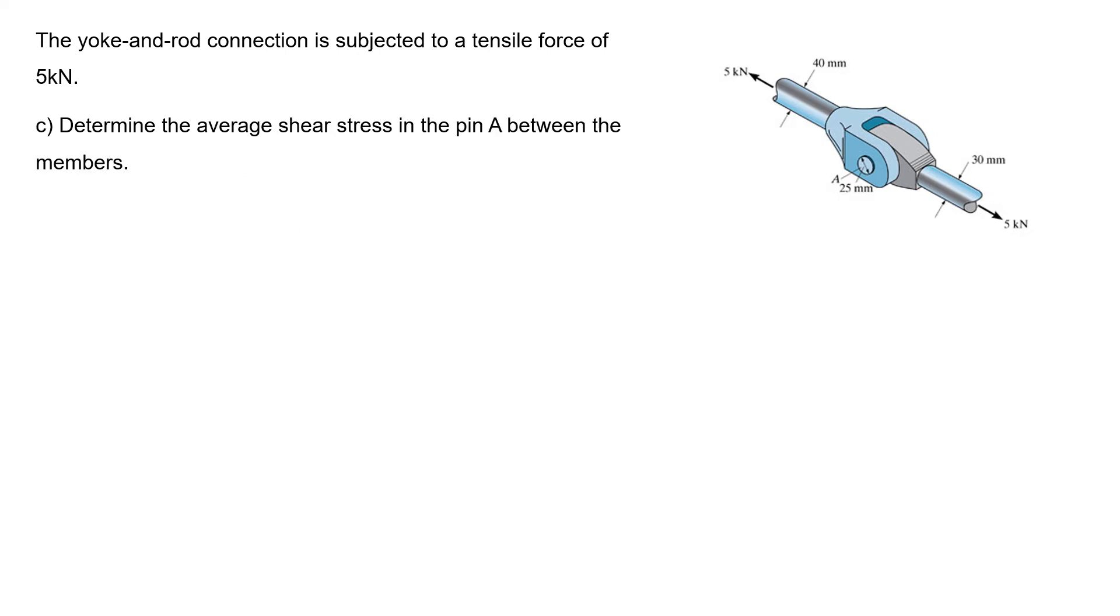Part C determines the average shear stress in pin A between the members. Pin A is here, with a 5 kN force applied. This is a double shear stress situation, so the force on each shear plane is 5 kN divided by 2.